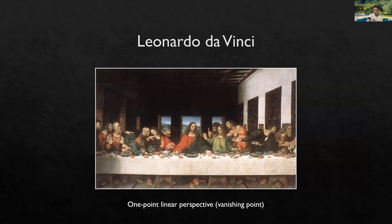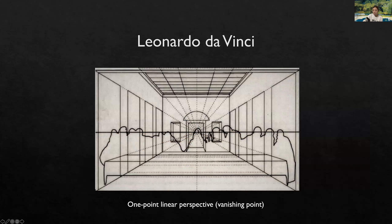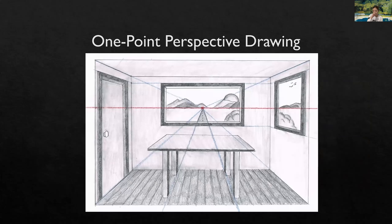This is the Last Supper by Leonardo da Vinci. In this painting, he used one-point linear perspective with the vanishing point at the center of the implied space. This is a good perspective technique for compacting many objects in a limited space. Here is another example of one-point linear perspective drawing.